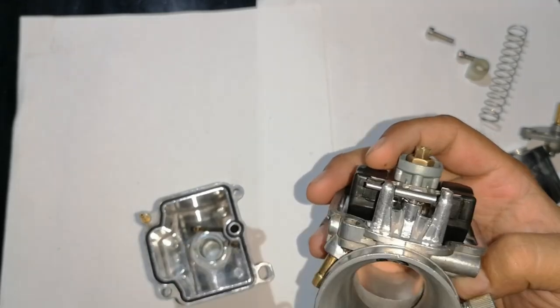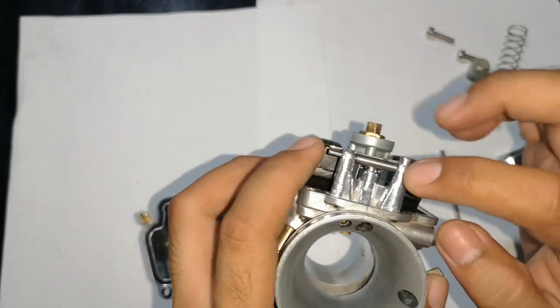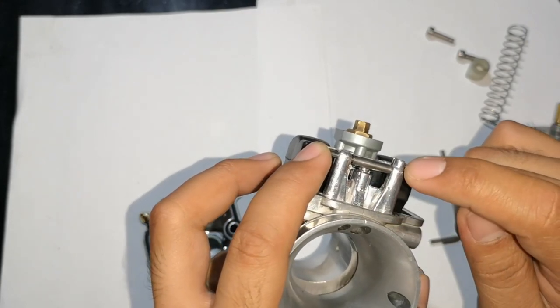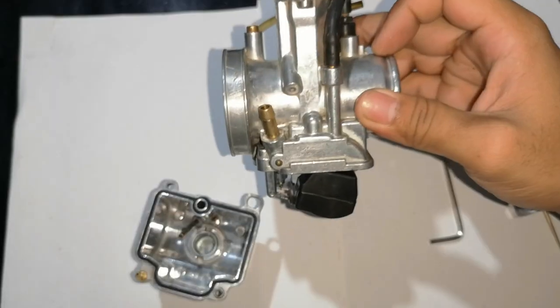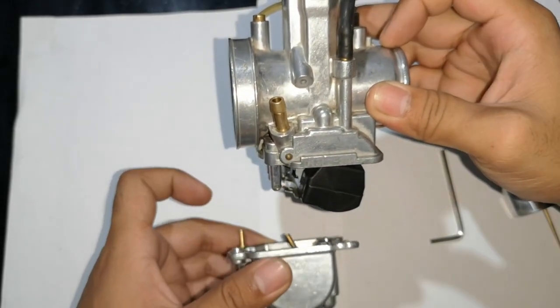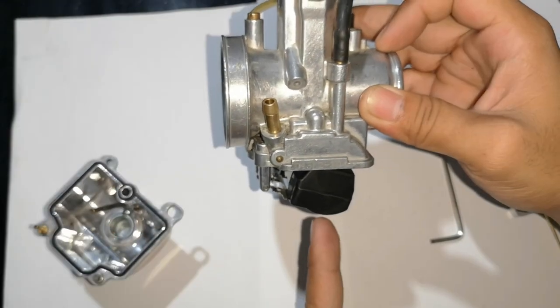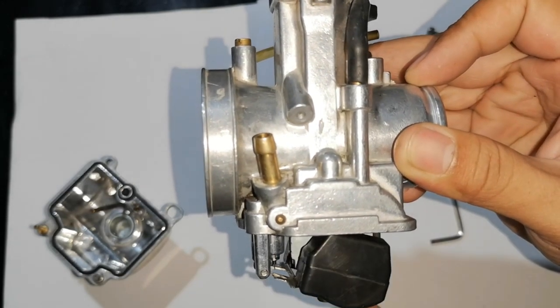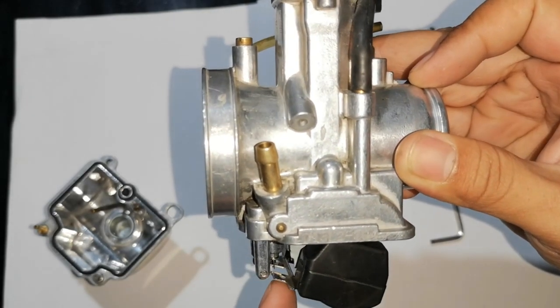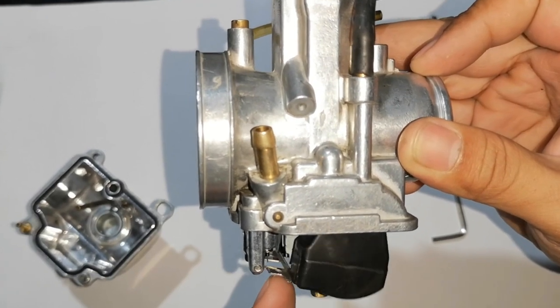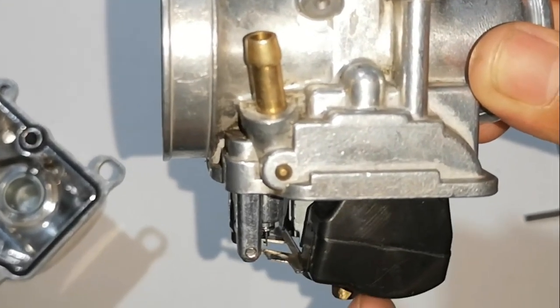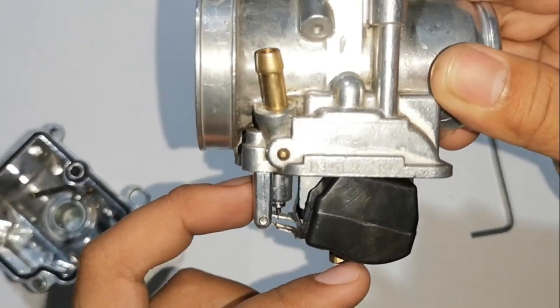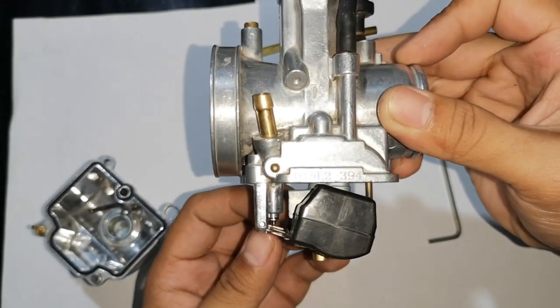Kaso, dito sa butas na ito, merong nakaharang na needle valve. Itong needle valve, yan siya ang nagsisilyo or sasarado, nagtatabo, or tinatabunan niya ang butas, ang daanan ng gasolina papasok. Kapag ang bowl napupuno, tumataas ang level, itong floater or float tumataas. At kapag tumaas ito, habang tumataas ito, nagsasarado itong needle valve. Yan. Hanggang sa maabot niya ang desired level ng gasolina sa float bowl, sisirado ito. So, ano ba ang itsura na needle valve?